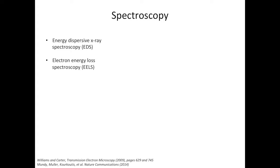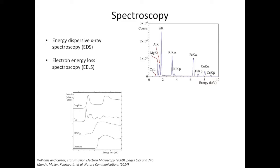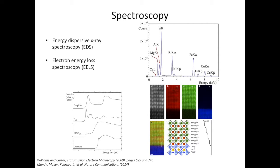The fourth section is spectroscopy. Imaging and diffraction give you structural information, while spectroscopy gives you chemical information. The two techniques we'll discuss are energy dispersive X-ray spectroscopy (EDS) and electron energy loss spectroscopy (EELS). EDS gives chemical information, while EELS additionally provides chemical bonding information. For example, the EELS spectrum of diamond looks very different from carbon-60 and graphite. Combining EDS and EELS with STEM using an aberration-corrected TEM, you can get chemical information of individual atomic columns.